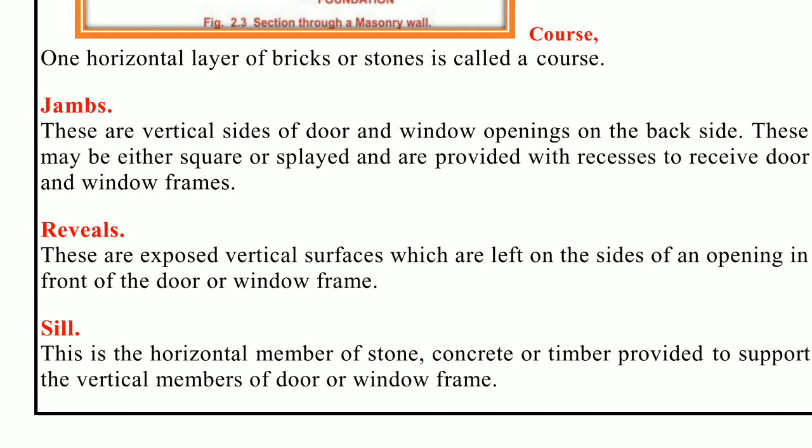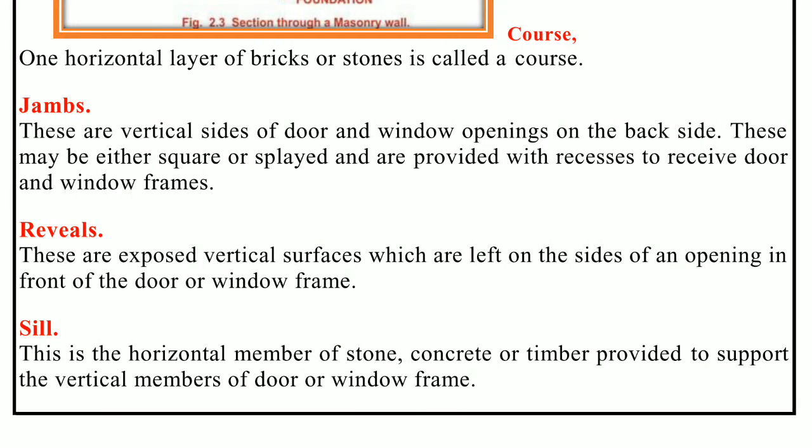Next, jambs — J-A-M-B-S. The sides of openings such as doors, windows, etc. are known as jambs, and they are constructed similar to quoins. The jambs may be either plain, square, or splayed. Splayed jambs are preferred as they allow the shutters to open at an obtuse angle and thus permit more light and air to come in.